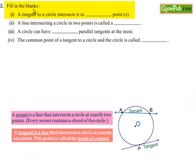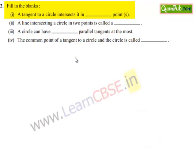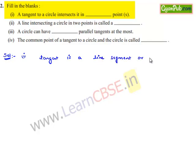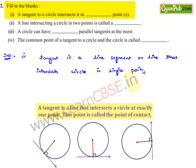Moving on to the second question — fill in the blanks. Four blanks are given. First blank: a tangent to a circle intersects it at how many points? From the definition of the tangent, we know that a tangent is a line or line segment that intersects the circle at a single point, and that point must lie on the circumference. Therefore, the answer for the first blank is one point.